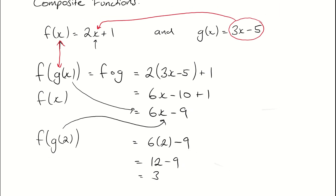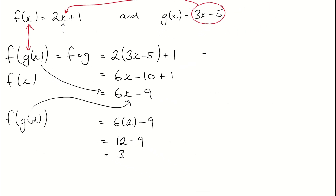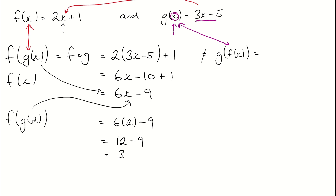Now what's important to note is that f of g of x is not the same as g of f of x. Now we're looking at our g of x function, and instead of an x, I've got an f of x written in here. So everywhere I see an x on this side, I now need to put in an f of x. I take this 2x plus 1 and that goes straight in for that x instead.